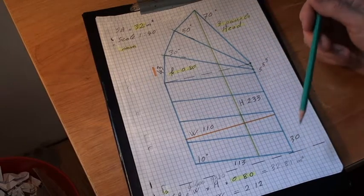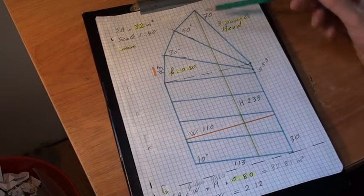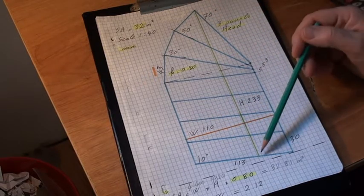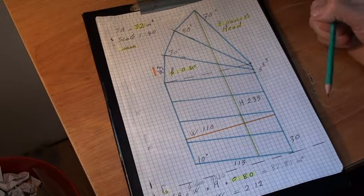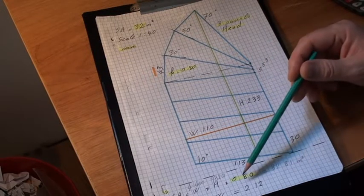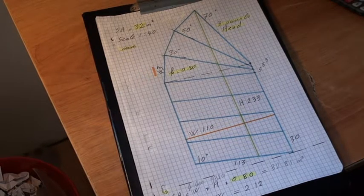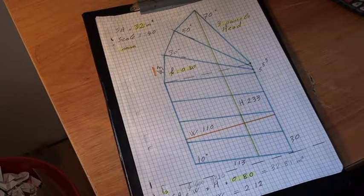So when you draw a sail, the only thing you have to know to work out the surface area is the width and the height of the sail from the peak to the boom of the sail. And you multiply it by 0.8. So that's it for the formula.